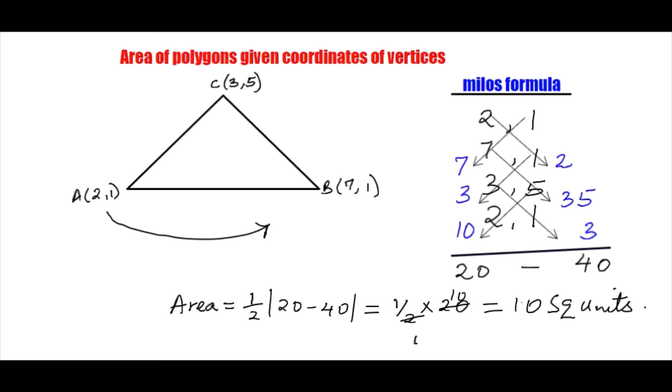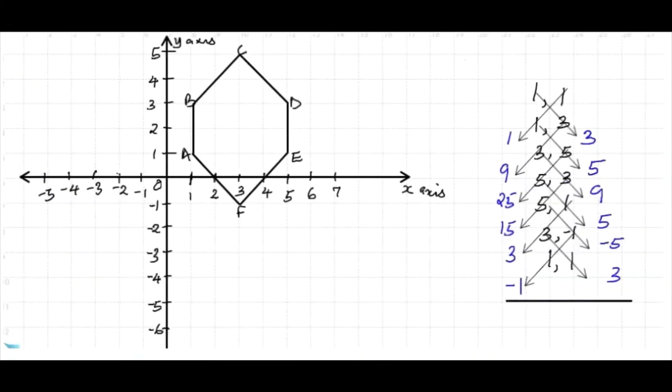So the area of our triangle becomes 10 square units using the Milos formula. Let us look at another question. Now there's a question here that is involving a hexagon. Why hexagon? Because it has six sides.